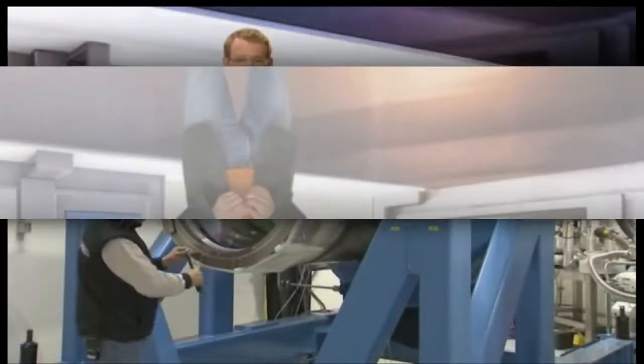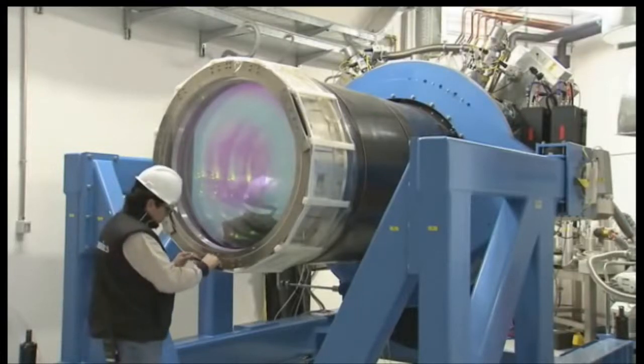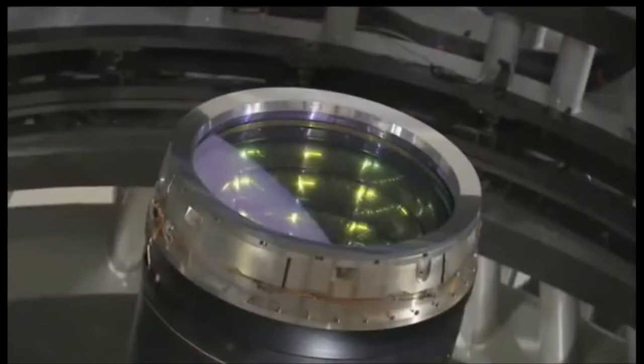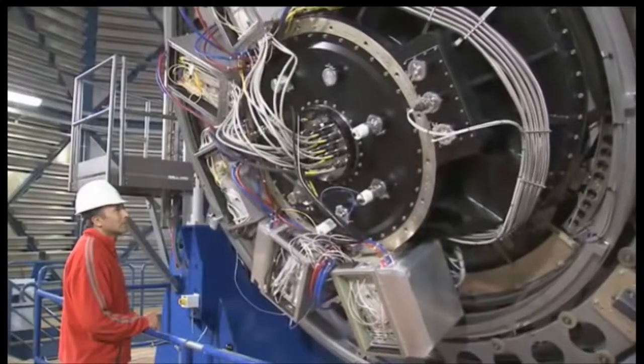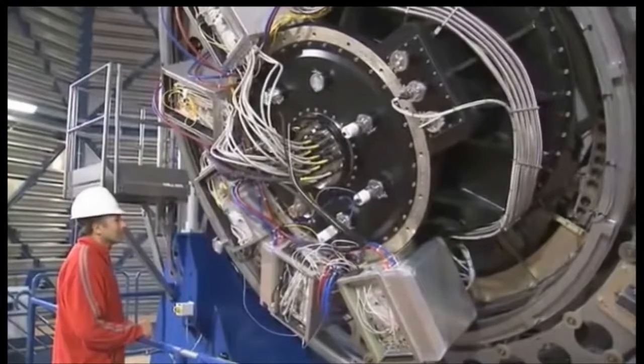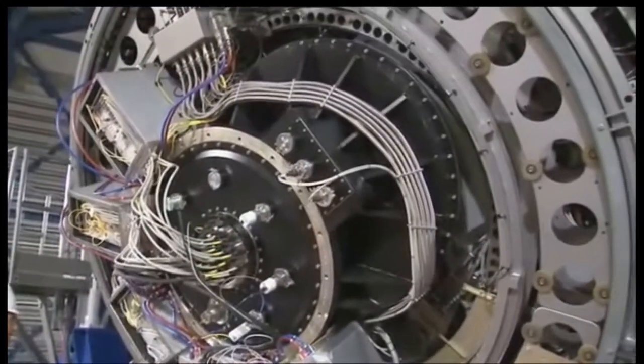VISTA has a main mirror that is 4.1 meters across, which makes it the largest telescope in the world that is entirely dedicated to surveying the sky. The mirror is also the most highly curved of its size and quality ever made, and its construction was a major challenge. The telescope is housed in a dome near ESO's VLT on Cerro Paranal, which means that it shares the top quality observing conditions of that site. At the heart of VISTA is a 3-ton camera containing 16 special detectors sensitive to infrared light with a combined total of 67 megapixels. This huge instrument provides the widest sky coverage of any astronomical near-infrared camera.